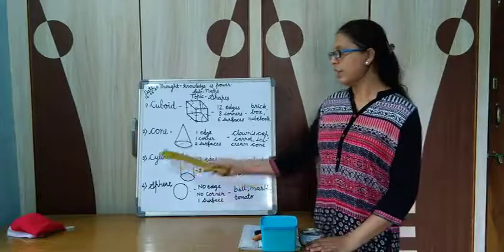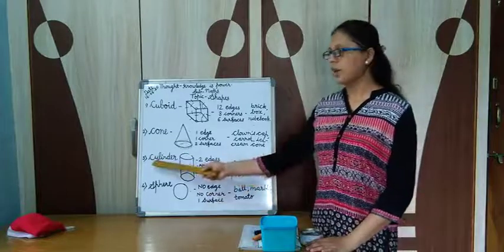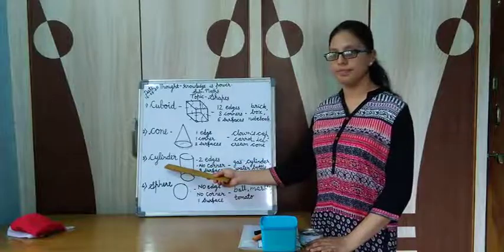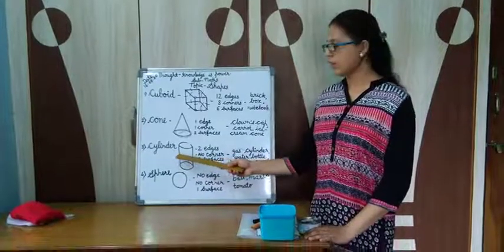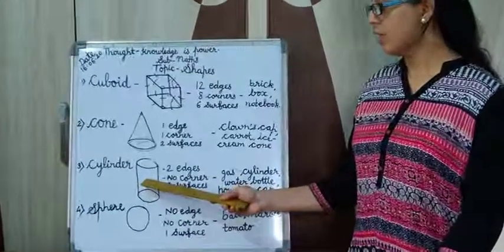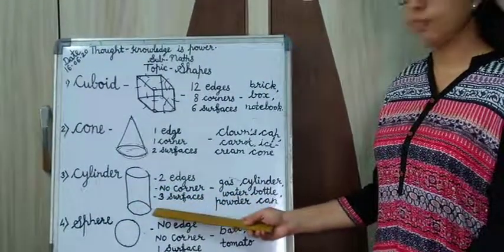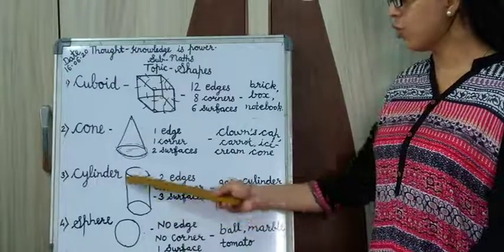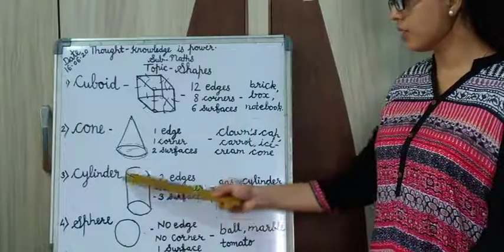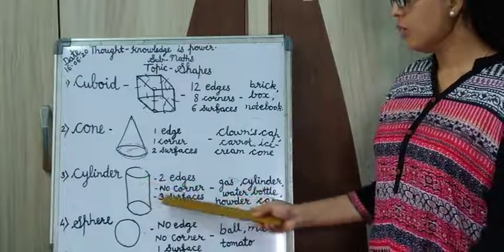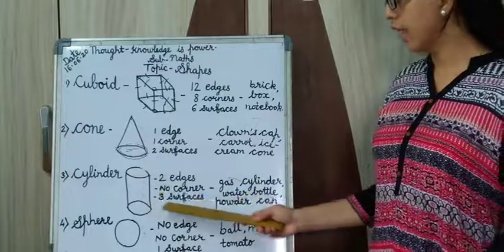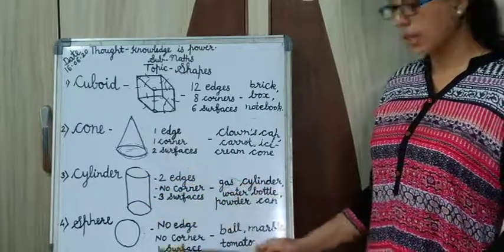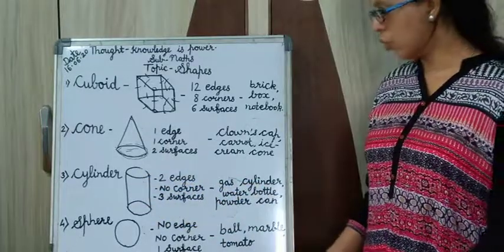Children, now we will see our third shape, that is a cylinder. It is a cylinder shape. A cylinder is having two edges, no corner and three surfaces. I will show you.